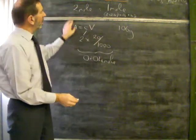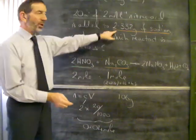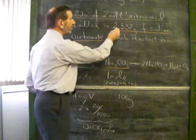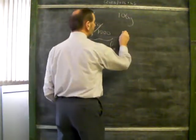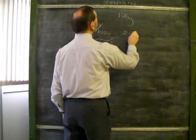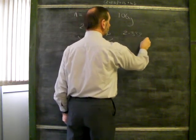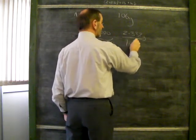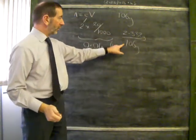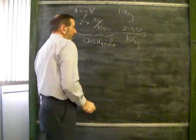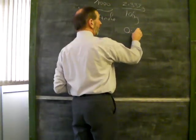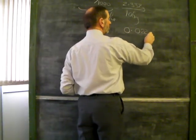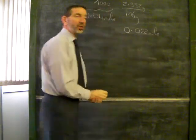How much do we have? We've only got 2.332 grams. How many moles is that? We have to divide 2.332 grams by 106. We're dealing with a fraction of a mole. So when you work this one out, it turns out that we have 0.022 of a mole of sodium carbonate.